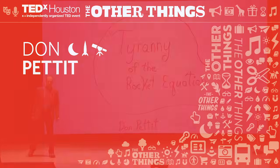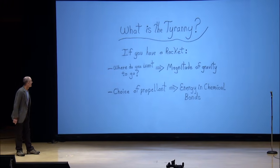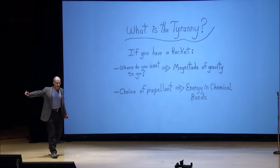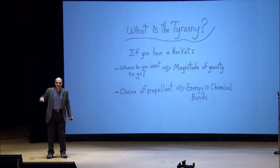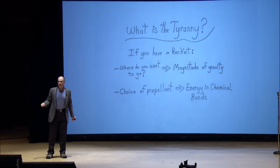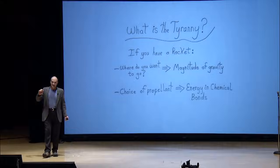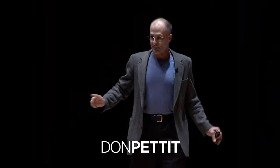The Tyranny of the Rocket Equation. If you have a rocket, its design hinges on a momentum balance that we call the rocket equation. The rocket equation involves the magnitude of the gravity field you are navigating in — which basically says where do you want to go — and you have to have propellant because you've got a rocket, and the propellant gets its energy from chemical bonds. These two things that human beings have almost zero control over — the magnitude of gravity and the energy in chemical bonds — constitute what I call the Tyranny of the Rocket Equation, because it holds a strong grip on how we can make our rockets.